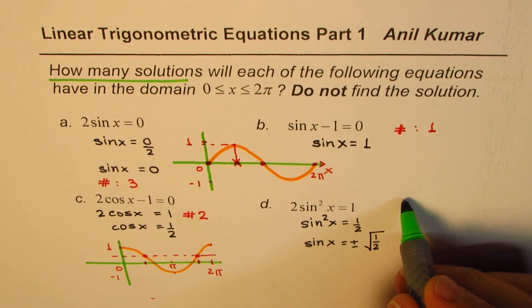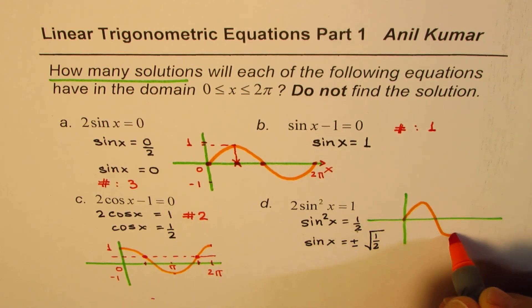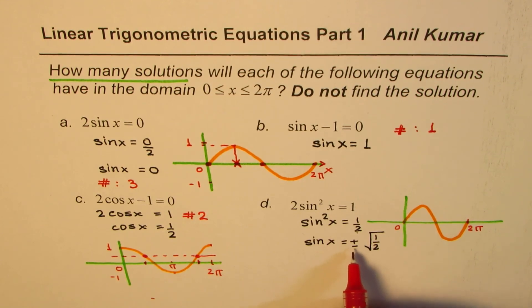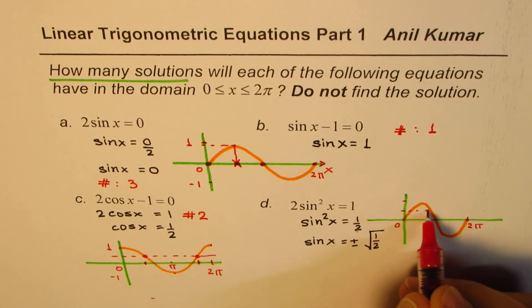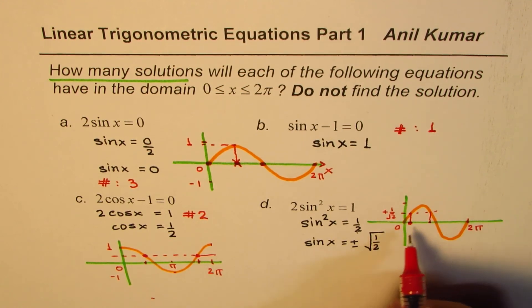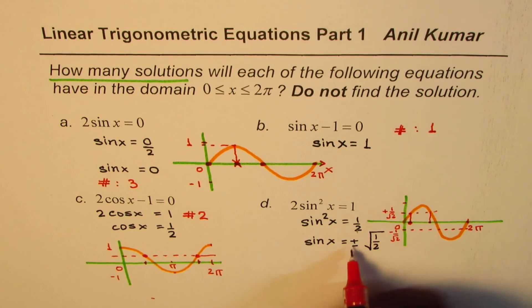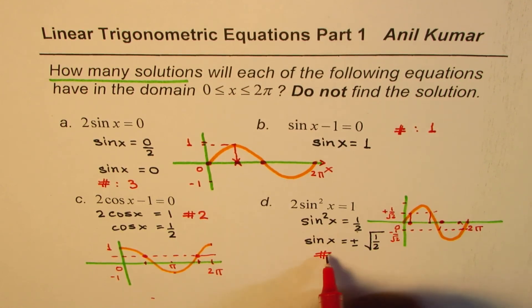For the quadratic equation 2 sin²x = 1, we need sin x = ±1/√2. Sketching the sine wave from 0 to 2π: a dotted line at +1/√2 intersects the sine curve at two points, giving two solutions. A dotted line at −1/√2 also intersects at two more points, giving two additional solutions. So the total number of solutions for 2 sin²x = 1 is 4.